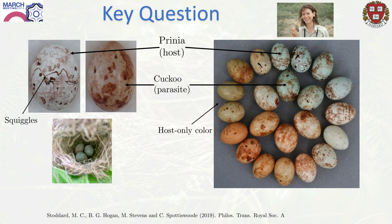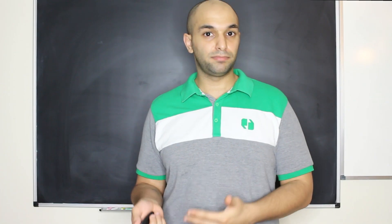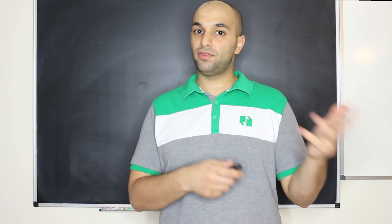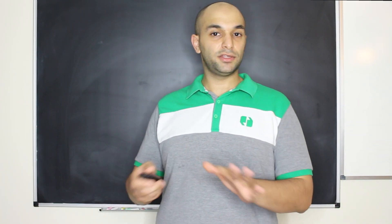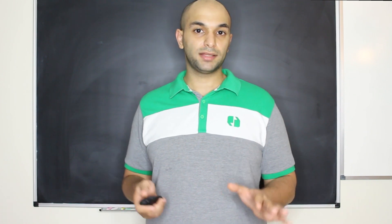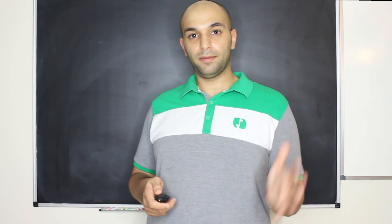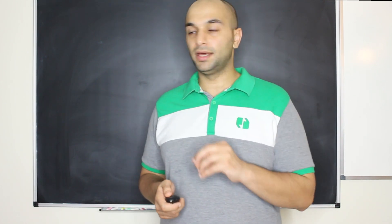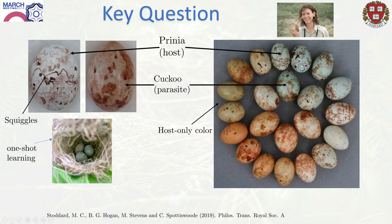There's also a feature with squiggles that the parasites can't reproduce. You might wonder why the host doesn't use that as a binary feature — if there is a squiggle, it's probably my egg; if there isn't, it's not. But they don't do that, and I'll talk about why that might be a little later.